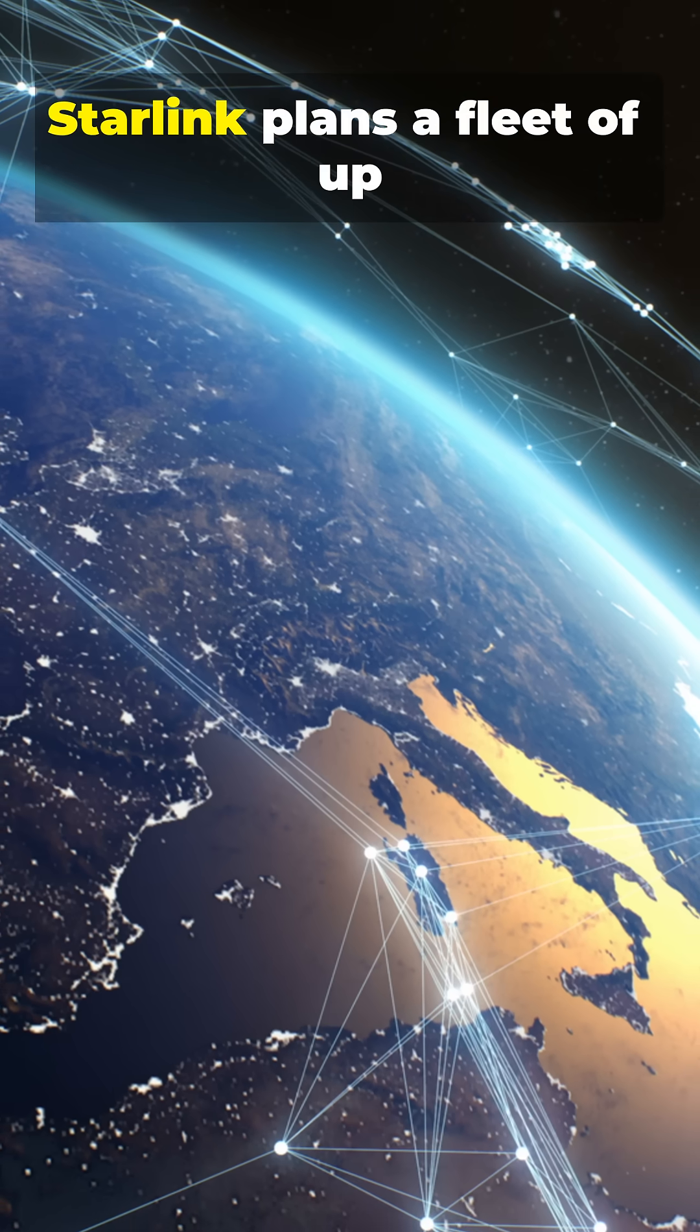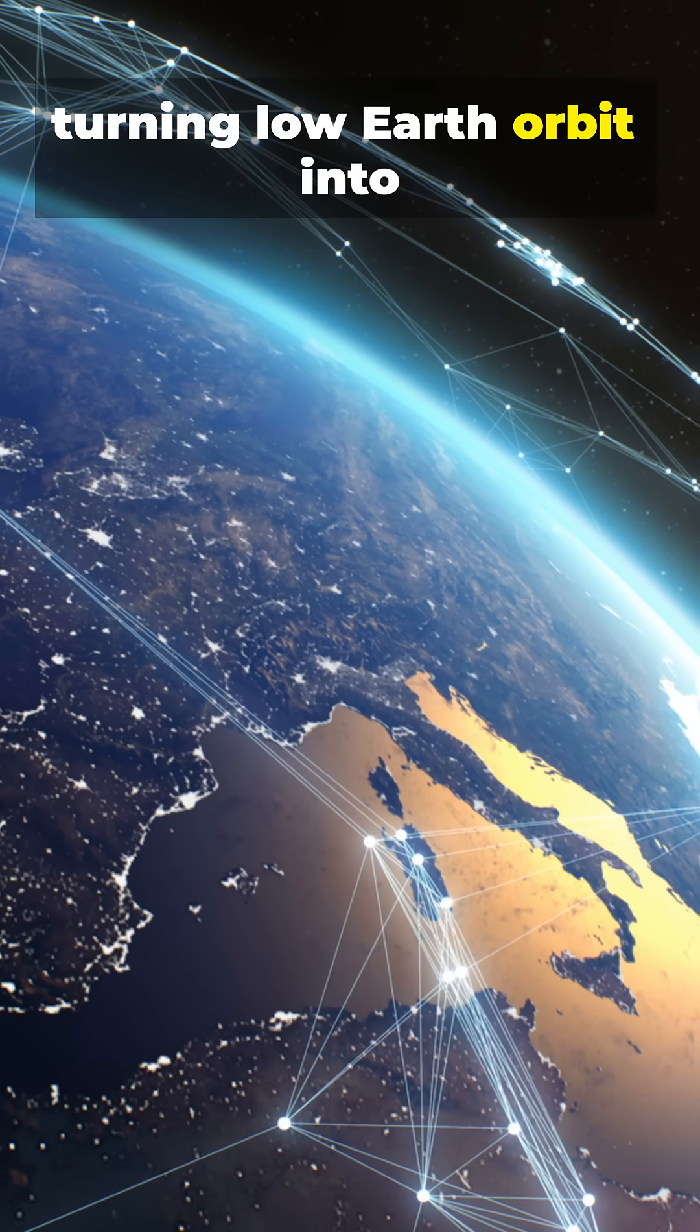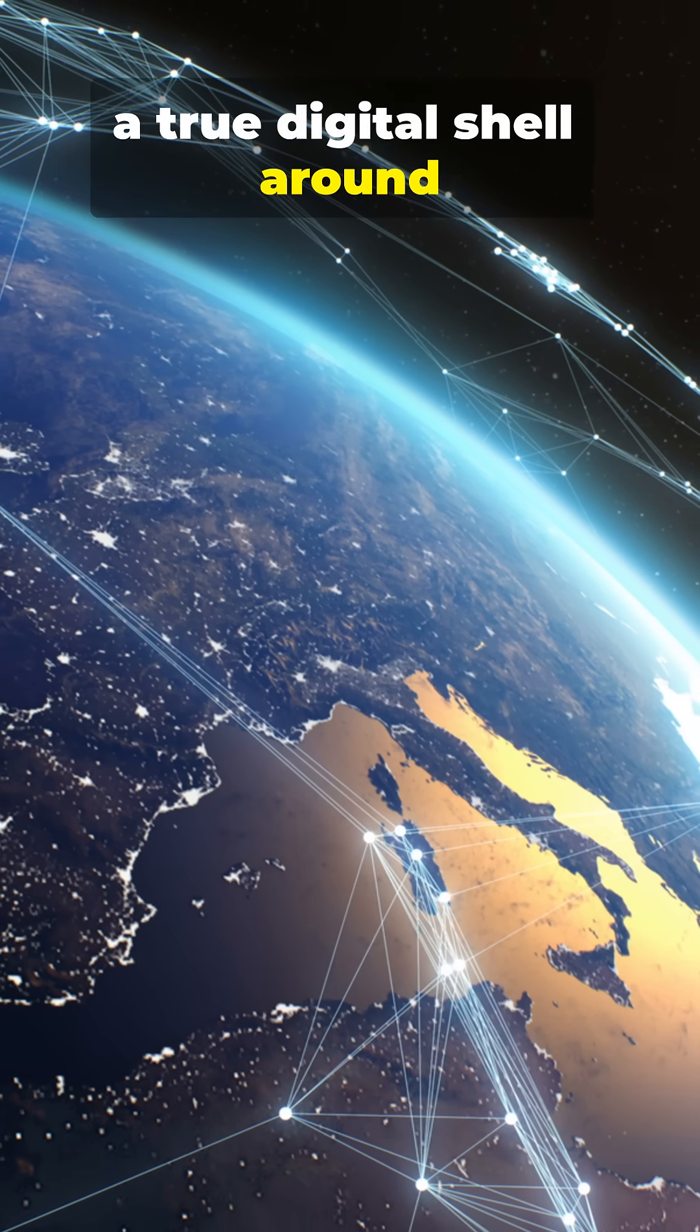By around 2030, Starlink plans a fleet of up to 42,000 satellites, turning low-Earth orbit into a true digital shell around our planet.